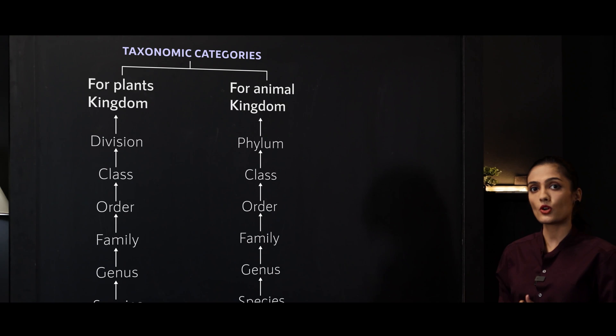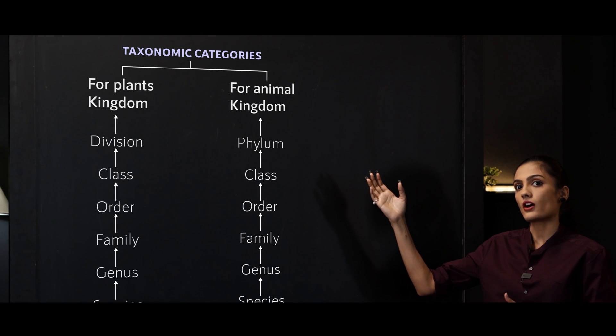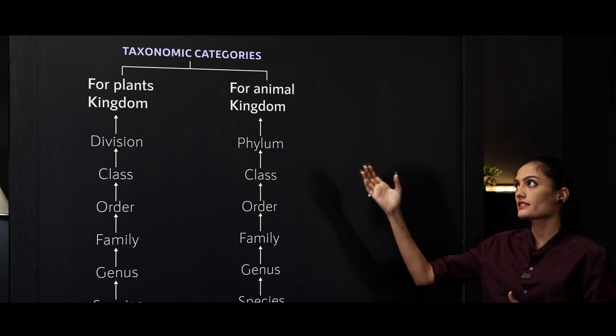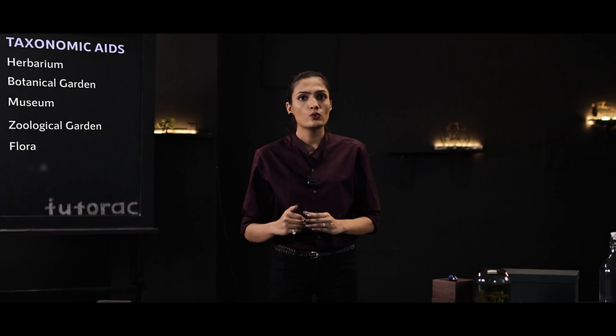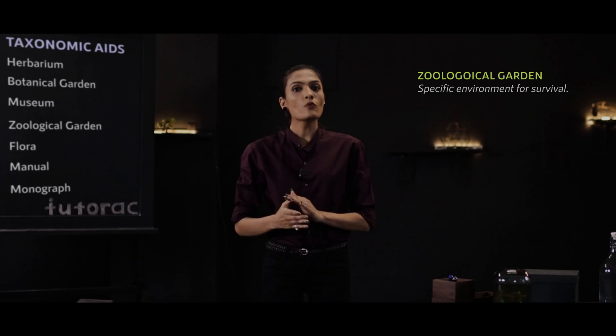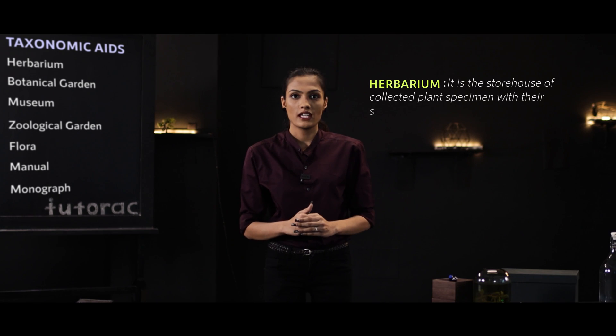We'll take a pause at taxonomic hierarchy categories, from species to kingdom, for both plants and animals. And finally, we'll learn about how these organisms are preserved — that means we'll learn about zoos, herbariums, national parks, and so on.